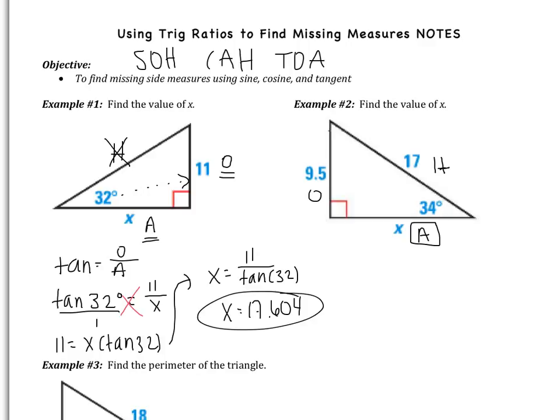So I could do opposite and adjacent, which would be tangent, which is what we just did. Or I could use adjacent and hypotenuse, which would give me cosine. Either one, since I know both the opposite and the hypotenuse side. Now because we just used tangent, I'm not going to use tangent. I'm going to use cosine.